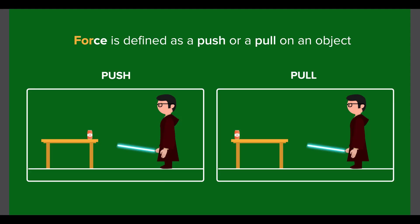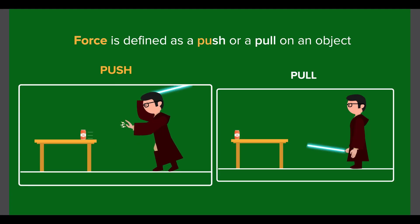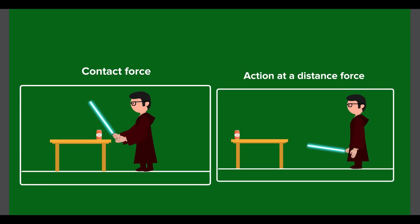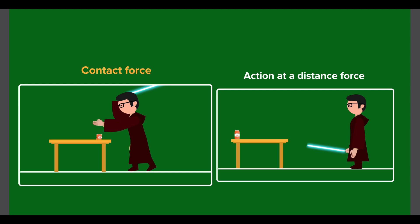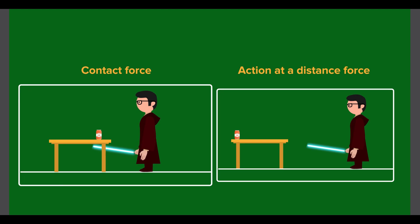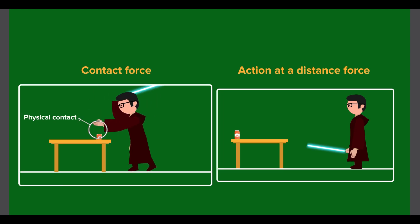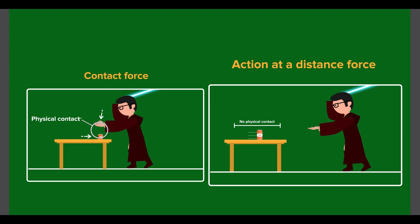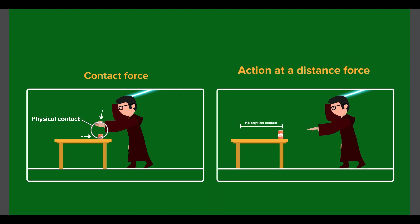In physics, a force is defined as a push or a pull on an object. The force may either be a contact force or an action-at-a-distance force. Contact force implies a physical contact between the objects, like the hand and the can, while action-at-a-distance force implies that there is no physical contact between the objects, yet both objects are pushing or pulling each other.